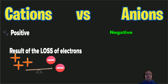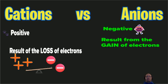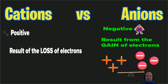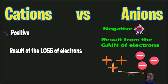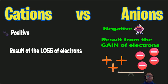The opposite gives us anions. Anions are atoms that are negatively charged and they result from the gain of electrons. Just like with a neutral atom, we would have the same number of protons as electrons around the outside. But when we add in more electrons, we now have more negative charges than positive charges, so we have a negatively charged atom called an anion because it has gained electrons.